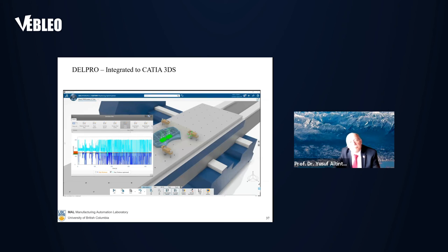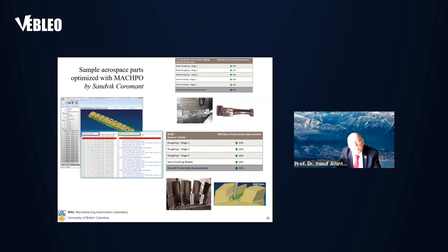Some results from industry, this is from Sandvik Coromant Company, this is aircraft part, before our optimization and after optimization, some blades, IBRs, as you can see, the productivity gains could be anywhere from 20% to 60-70% by deploying digital machine technology.